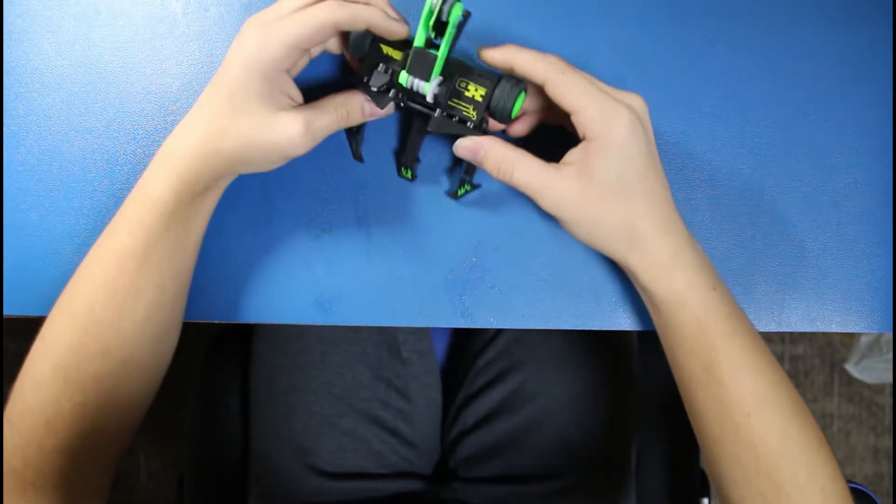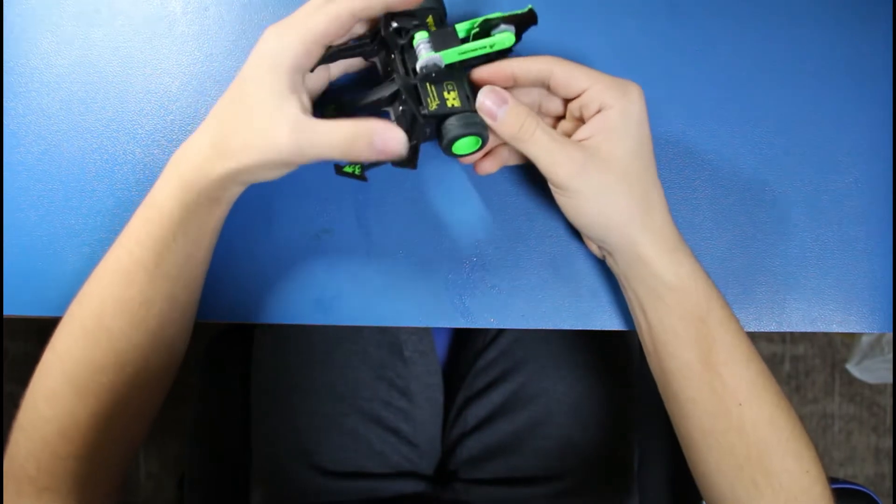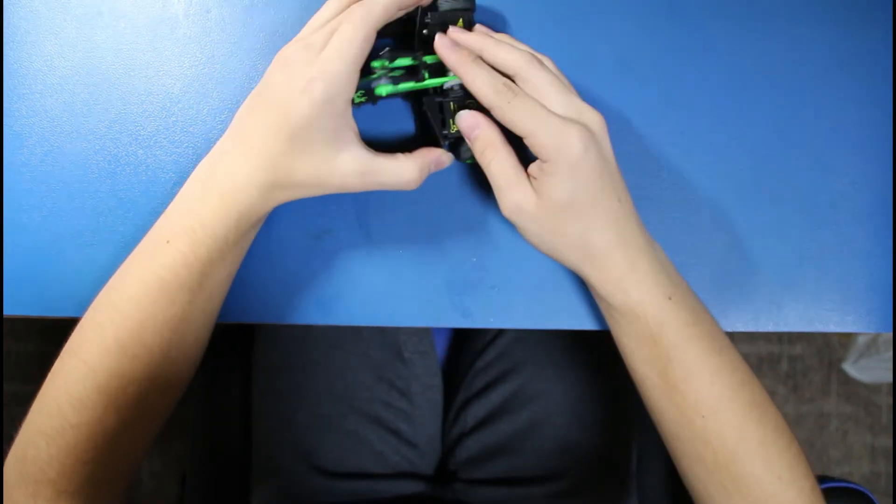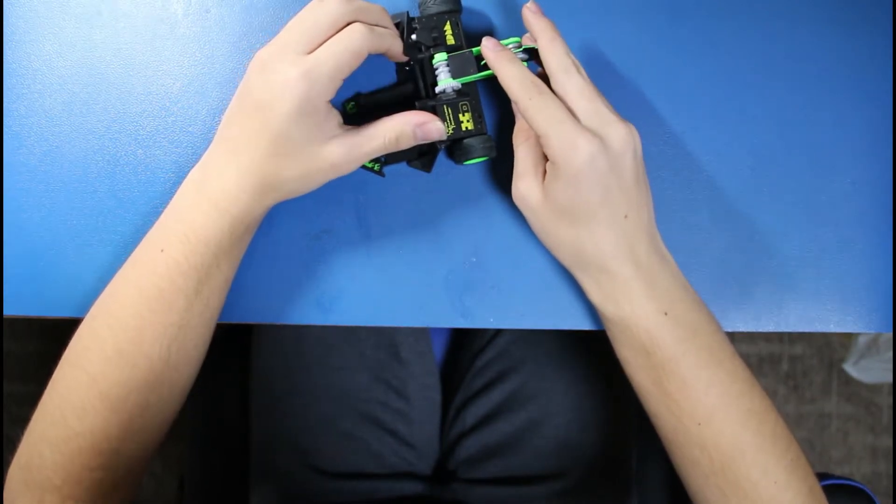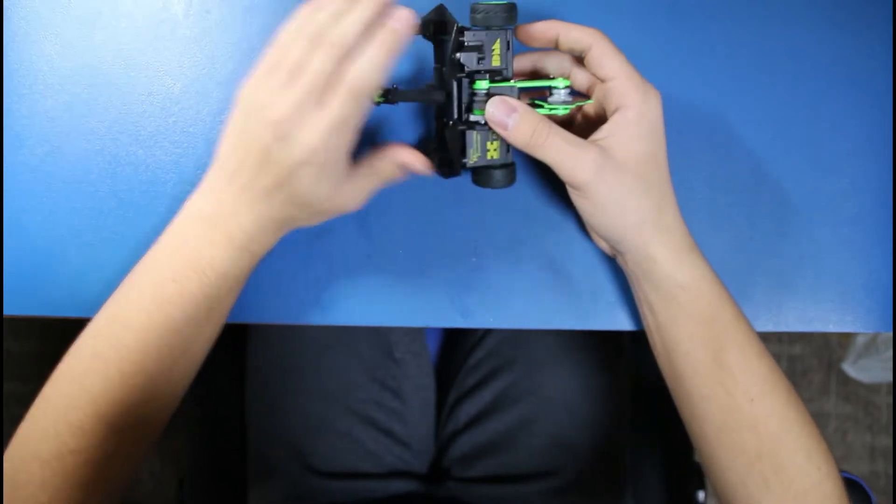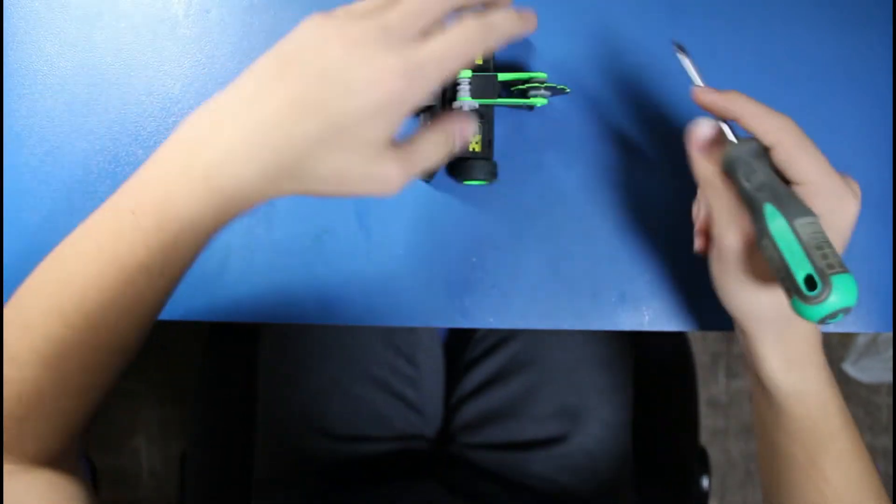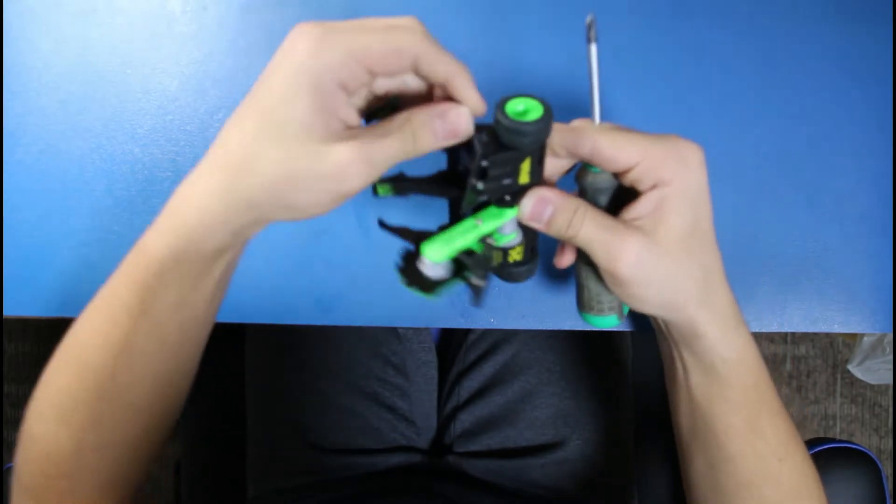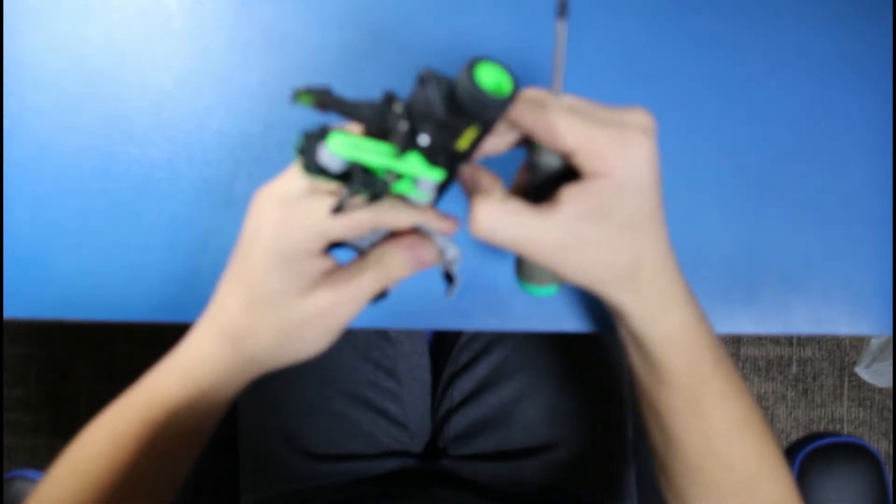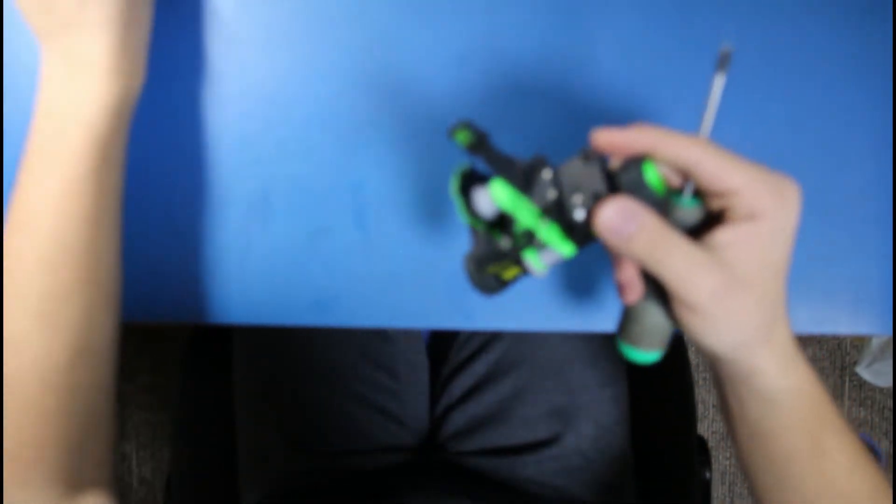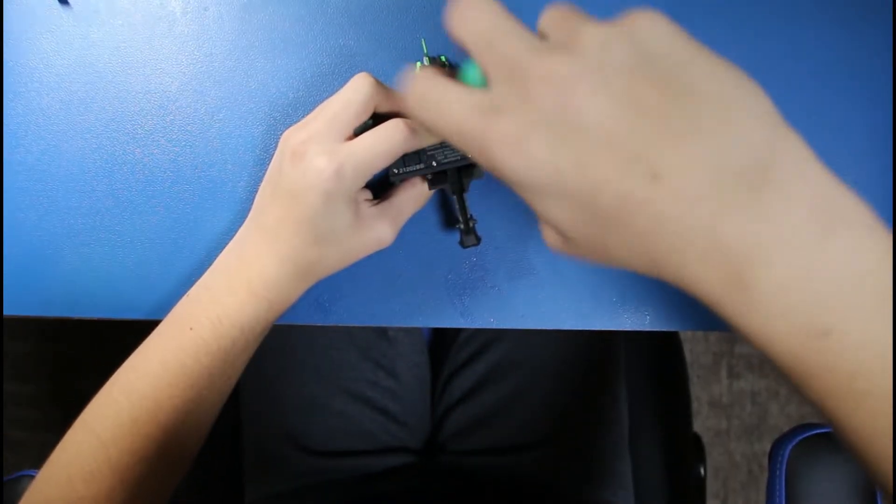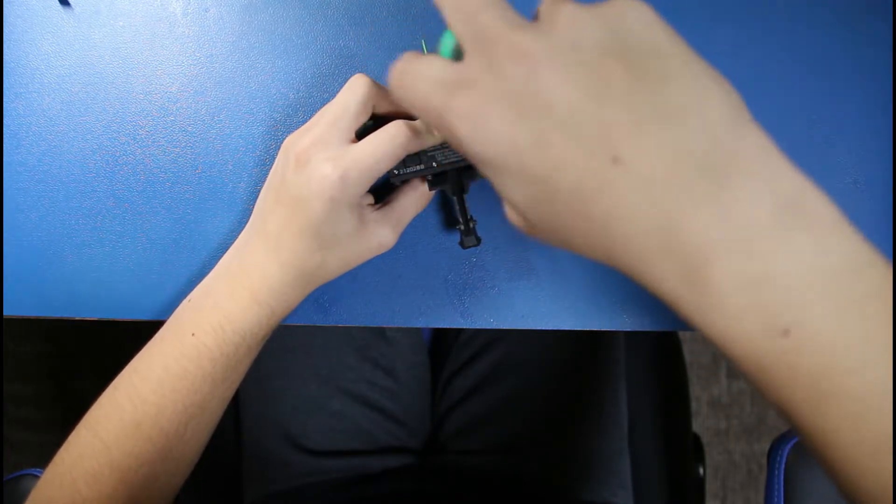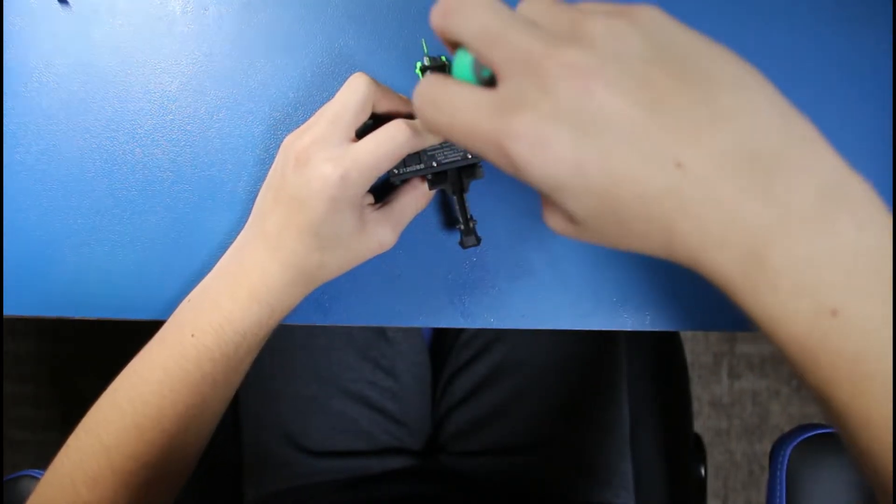So I have the Hexbug Sawblaze. I already have taken these apart so it won't be a full one because I can't actually build a robot for you, but what you want to do is grab a screwdriver and yank all the pieces off. For this Witch Doctor I used Sawblaze, pretty much all Sawblaze electronics. I will leave a parts list in either the description or a pinned comment.